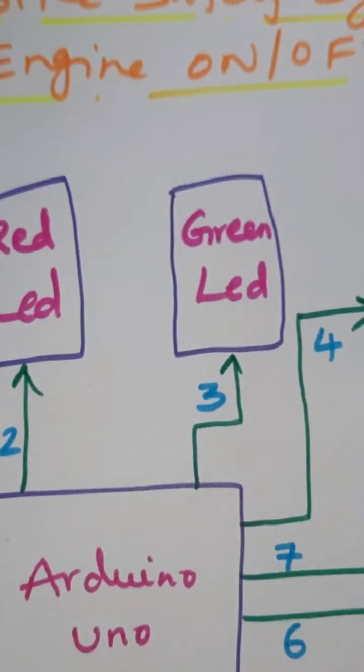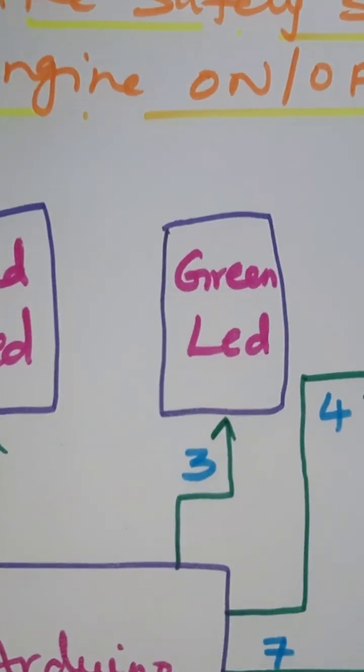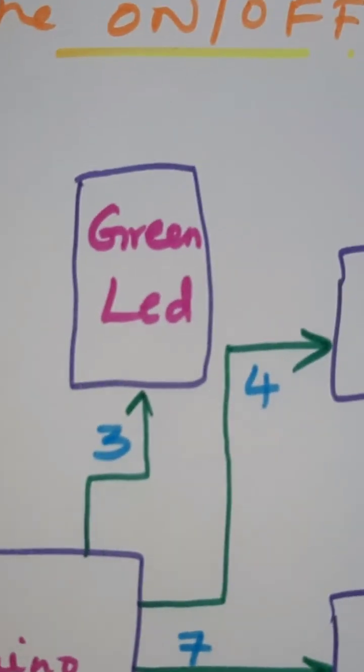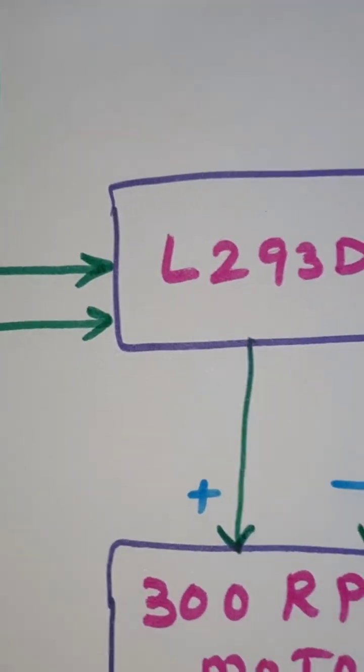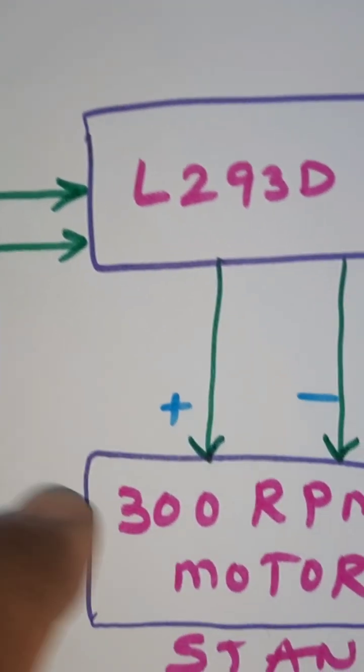We have one red LED and one green LED indicator. Red LED and green LED are on pins 2 and 3. The alarm is connected to pin 4, L293D motor driver IC on pins 6 and 7 with a 300 RPM motor.